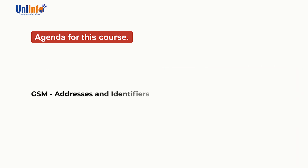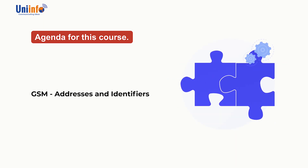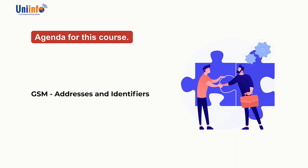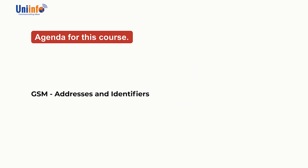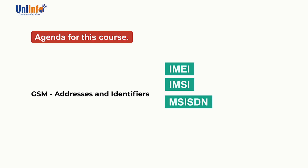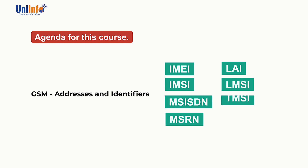GSM Addresses and Identifiers are used by GSM to help manage the connection during subscriber mobility. The various identifiers are IMEI, IMSI, MSISDN, MSRN, LAI, LMSI, and TMSI. We will discuss each of them in detail one by one.